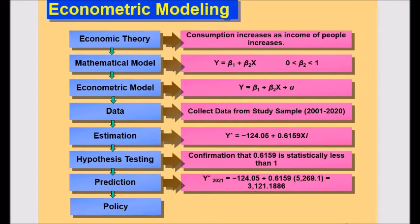Suppose that the GDP value for 2020 was $5,269.1 billion. Just put this GDP value in the place of X and you will get $3,121.1886 billion, which would be the consumption expenditure for 2021.